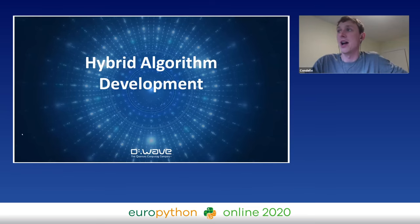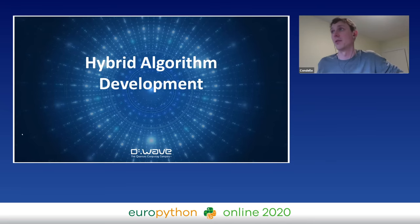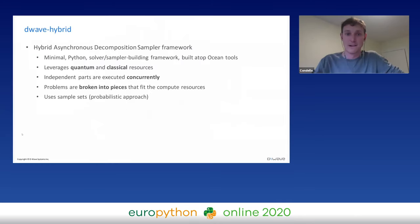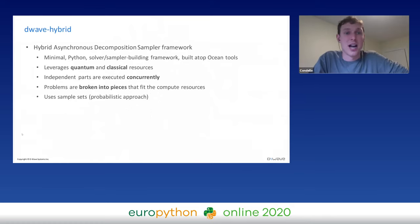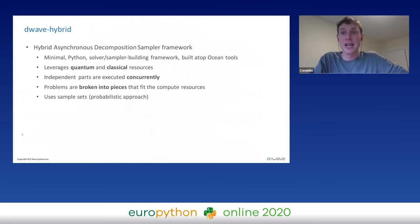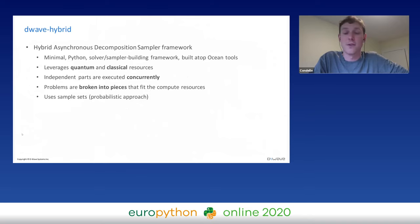I want to talk about hybrid algorithm development — combining the best of classical and quantum computing. In Python, we have our D-Wave Hybrid framework, which is a hybrid asynchronous decomposition sampler framework. It uses Python code to generate new hybrid algorithms in a very plug-and-play kind of way. You can create brand new, never-before-seen algorithms with just a couple lines of Python.